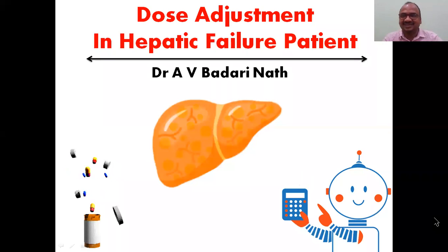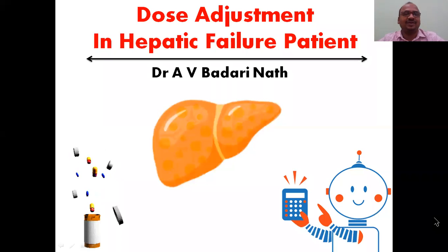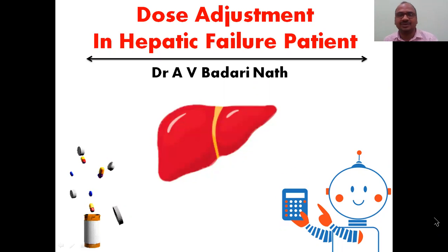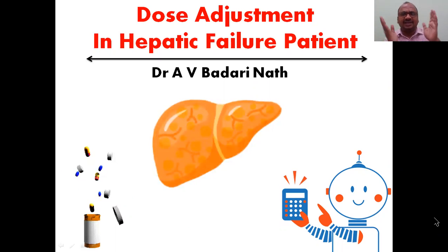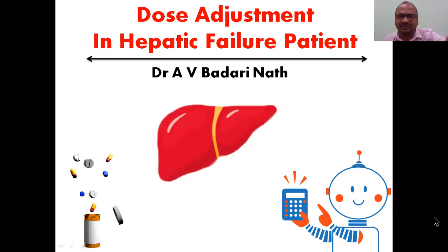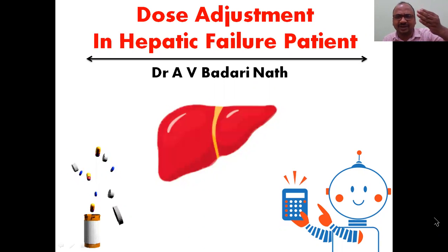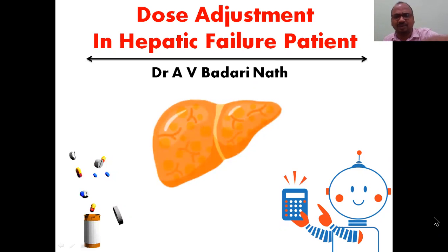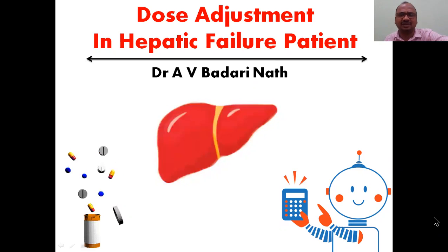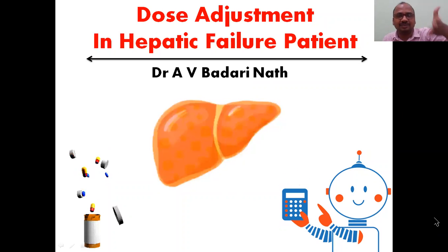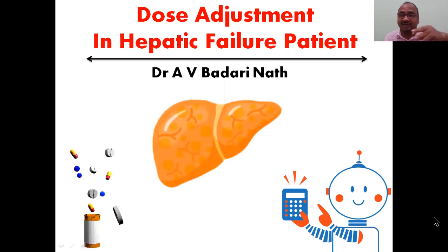Hi students, I'm Dr. Badrinath. In this video we'll see the dosage adjustment in the hepatic failure patient. Hepatic is nothing but the liver. Initially the liver was in red color and very smooth, but gradually the liver is becoming a failure — it develops bubbles, cyst formation, cracks, and turns yellow. So the liver is in failure.